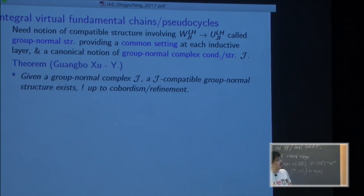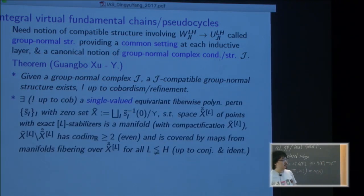And the theorem says that if you're given such a structure, you need this assumption of group normal complex condition. Suppose you have such a structure, there's always a compatible group normal structure which you can do things. It's unique up to cobordism and there's this single value equivalent polynomial perturbation fiberwise.